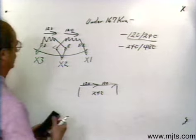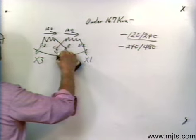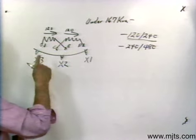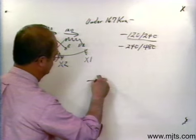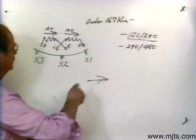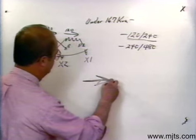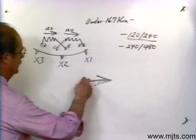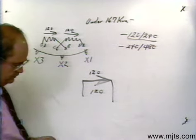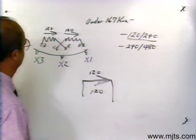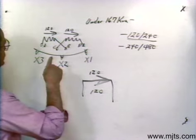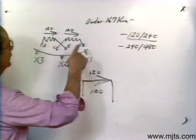Now let's say that instead of 240 volts I want 120 only. If I have a voltage vector of 120 volts, what I would do is put one vector right on top of the other — tie tail to tail and head to head. The voltage value I would get out of that would be 120 volts. To connect this transformer for 120 volts only, you have to make sure you use only X2 and X1.